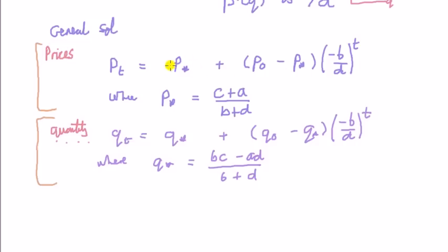First term, p star, does not depend on time, so there's no point looking at it. This second term is made up of product. p0 minus p star does not depend on time, so it just remains constant over time. So it's only this guy here which changes over time.